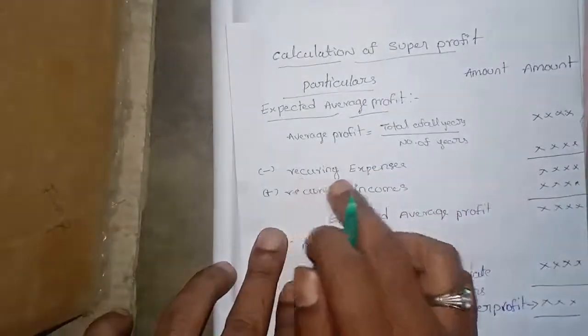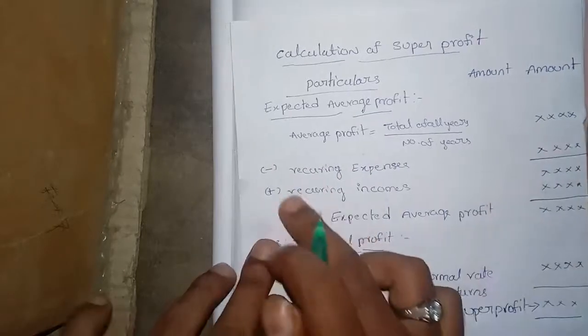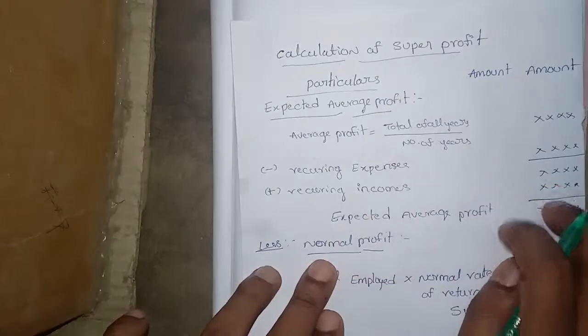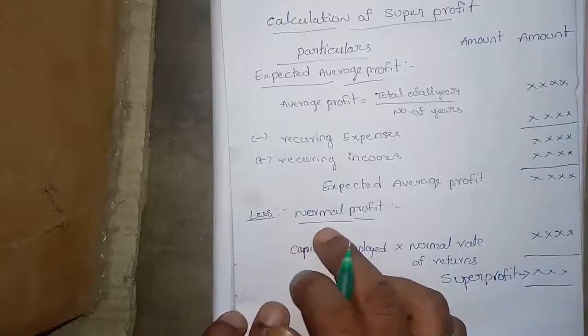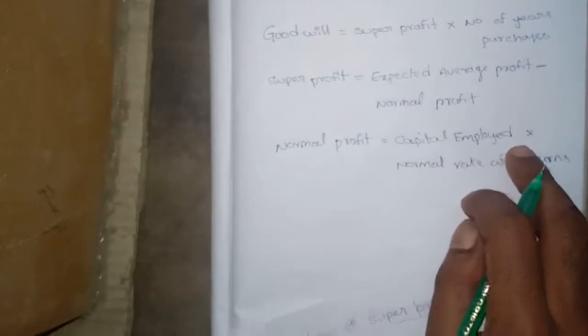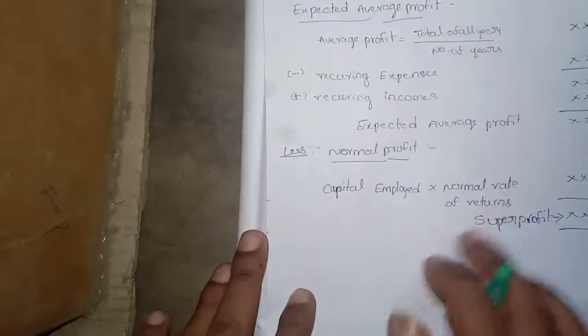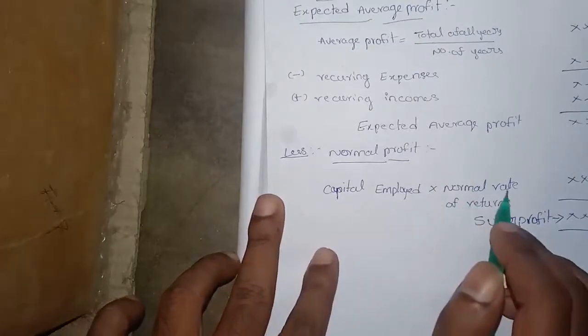If you have a recurring expense, you can adjust the average profit. If you have an expected average profit, you can add adjustments to find the average profit.